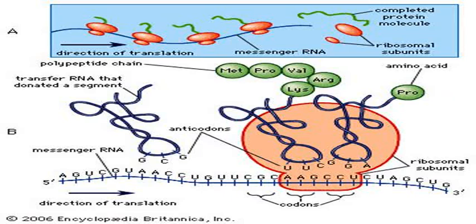The short-lived, unprocessed or partially processed product is termed precursor mRNA or pre-mRNA. Once completely processed, it is termed mature mRNA.